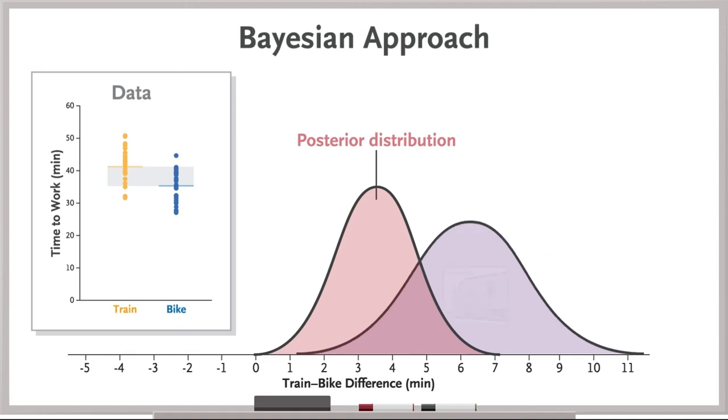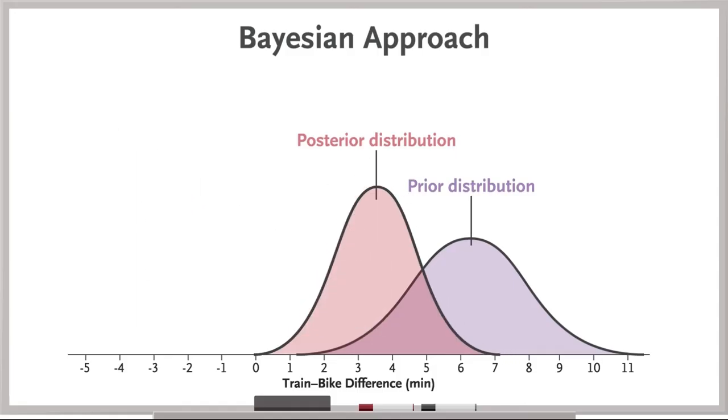You use this knowledge to form a distribution you expect, called a prior distribution. Your data will then allow you to alter your prior distribution into one more consistent with the measured data, your posterior distribution, which is the probability distribution of the effect size given the observed data and the prior distribution.